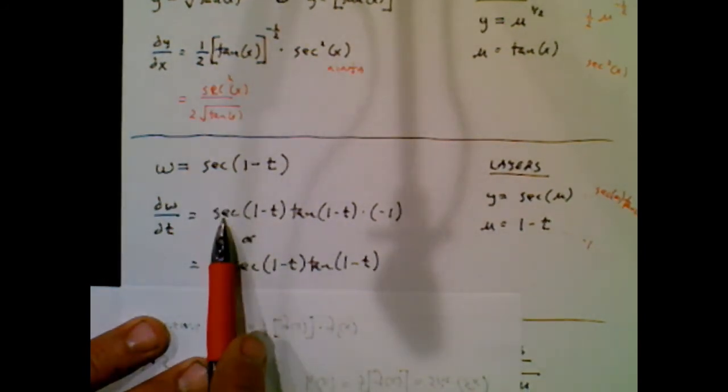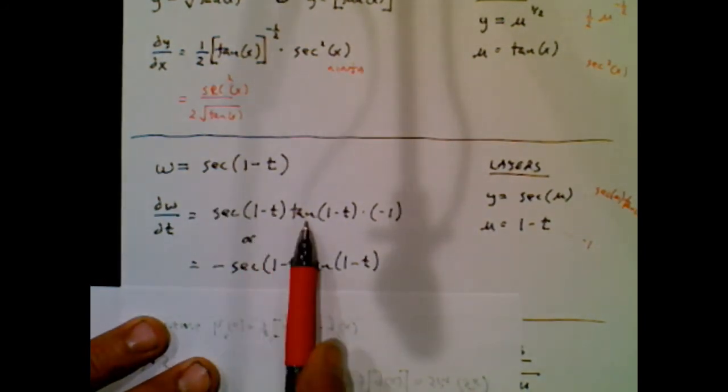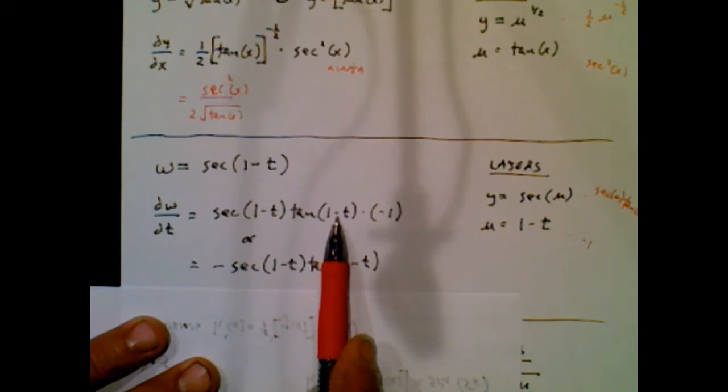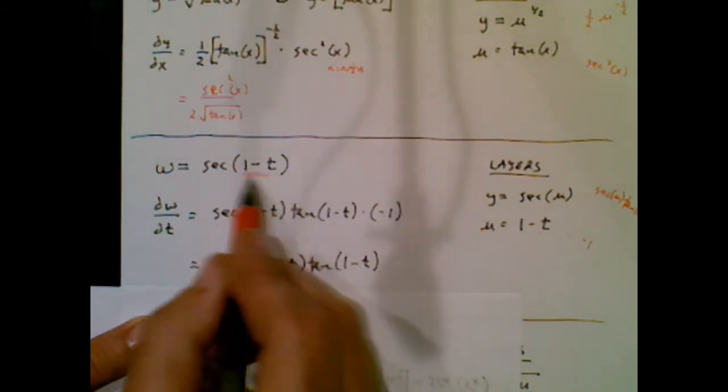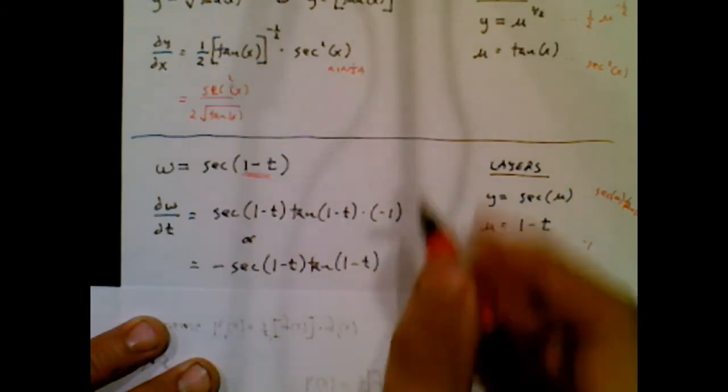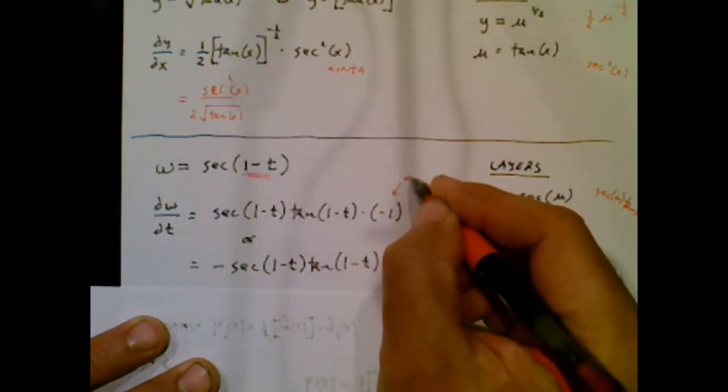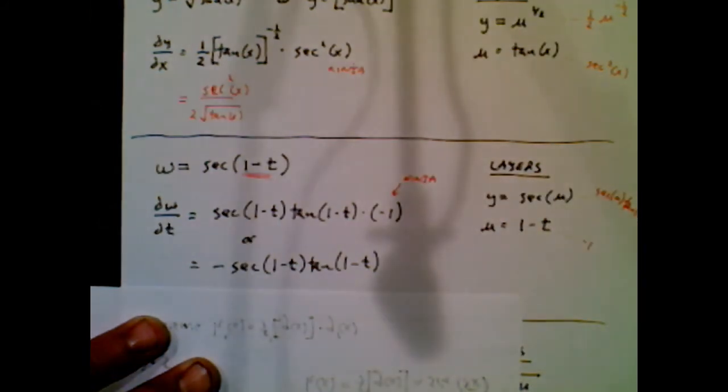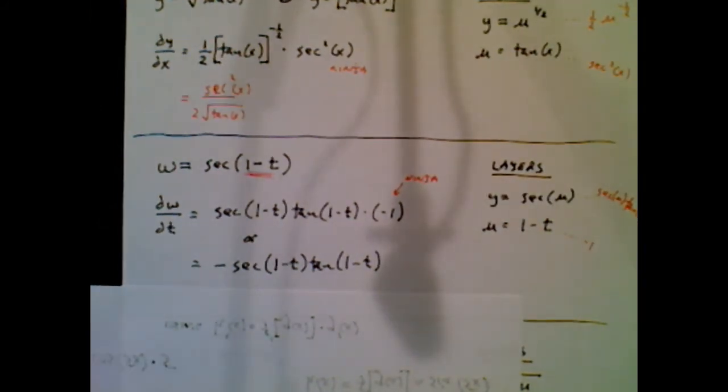So when I do my derivative, the derivative of secant is secant, blah, blah, blah, tangent, blah, blah, blah. And then this piece right there, that has a derivative of negative one. And I tack that on. This is the ninja. And that's a deadly ninja because you didn't even suspect him.